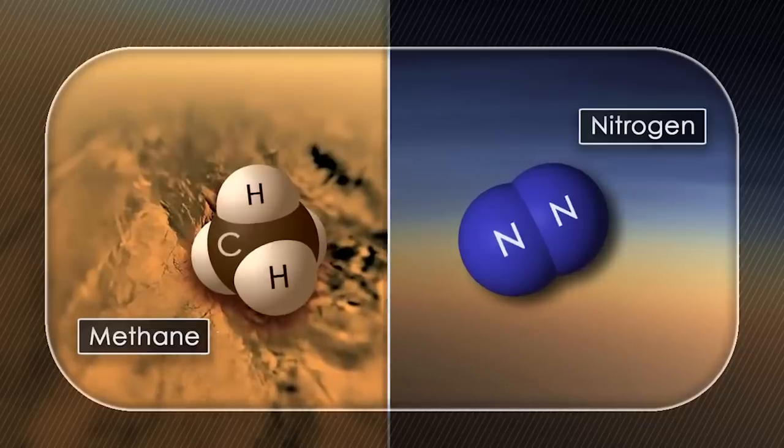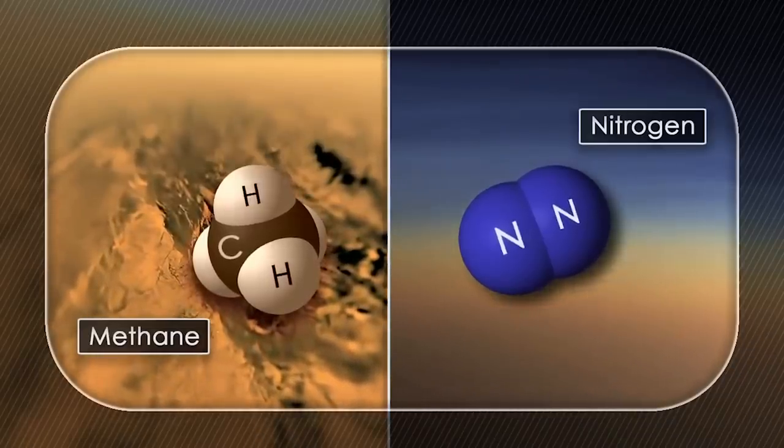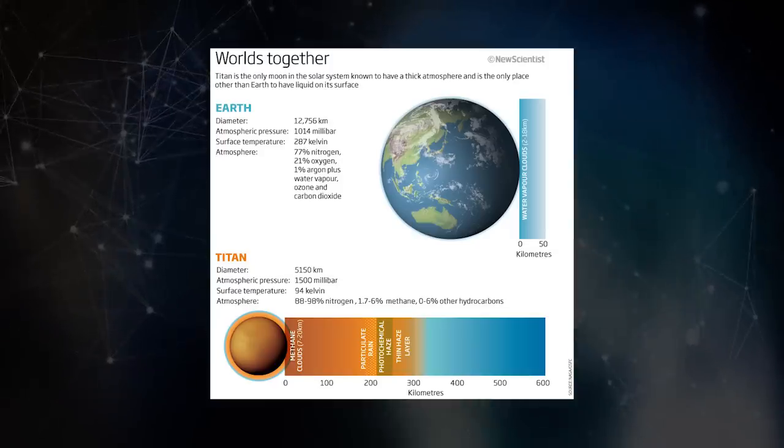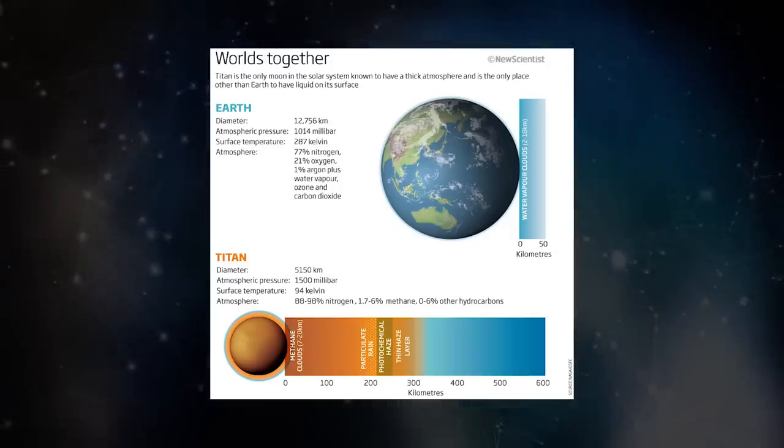Composed of 98.4% nitrogen, Titan has the only nitrogen-rich atmosphere in the solar system aside from Earth. The remaining 1.6% is composed of mostly methane and a little hydrogen.